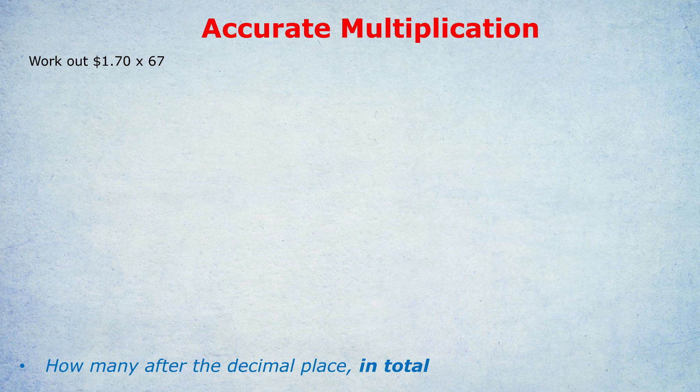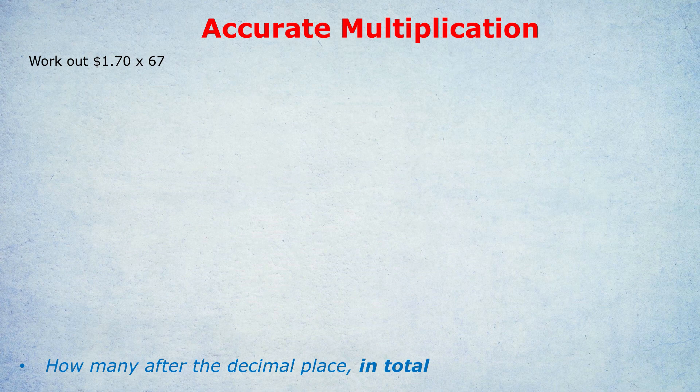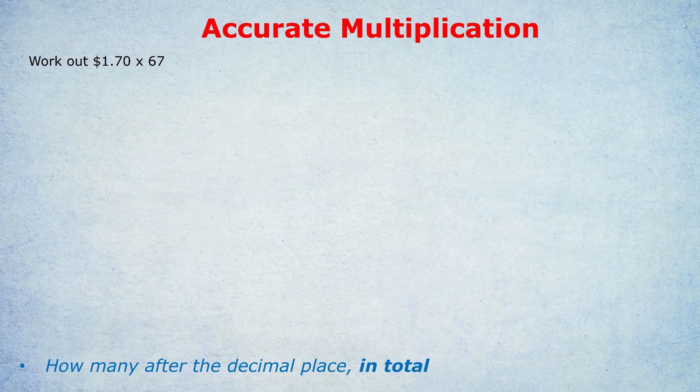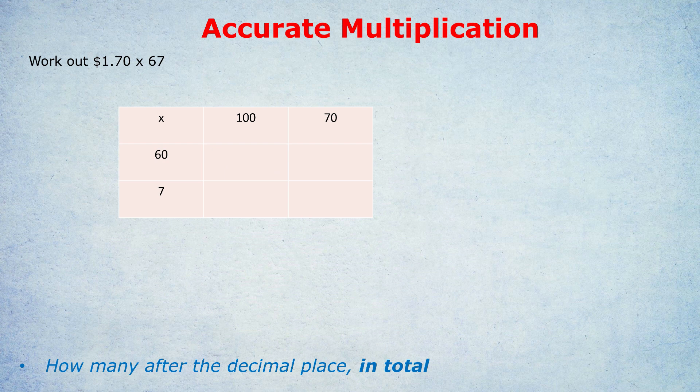Step one, and the most important step, is you ignore the decimal point. Just treat the numbers as they would be if there wasn't a decimal point there. What would the two numbers be if there weren't any decimal points? 170 and 67. So the calculation would be 170 times 67 if we ignored the decimal point. And that's the calculation we're going to do.